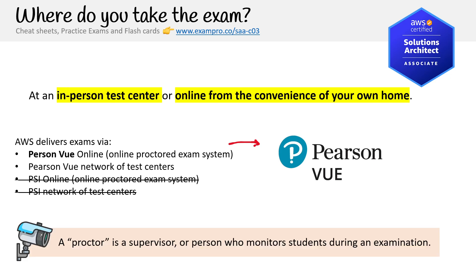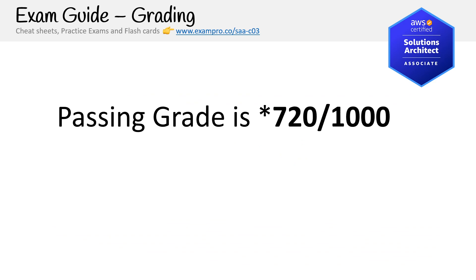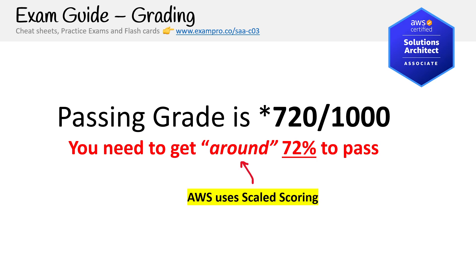These exams are proctored — I put that in quotation marks because I almost wonder if they're using AI-assisted proctoring these days. The idea is that there is someone supervising or monitoring students during the examination to prevent cheating. Be prepared that you may have to interact with somebody and show your workspace. To pass the exam, you need to get 720 points out of 1000. It uses scaled scoring, so it's around that amount. We always say around 72%, but you could get 72% and still fail due to various factors — aim for about 10-15% over that threshold.